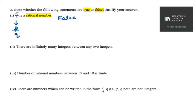It is in p-over-q form. But the condition of rational numbers is that p should be an integer and q should be an integer. But in this case, our p is under root 2. So under root 2 is not an integer. Therefore, we can say the first statement is false.